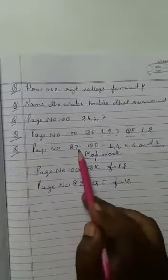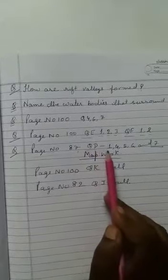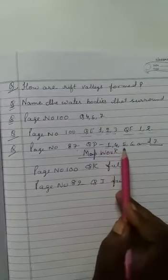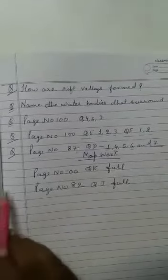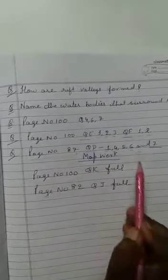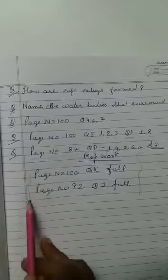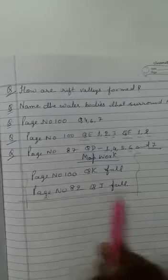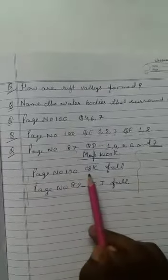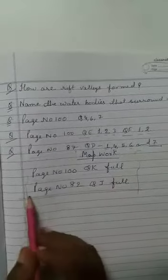Then page number 87, question number D: 1, 4, 5, 6, and 7. And for your map work, you have to do the revision of page number 100, question number K full, and page number 82, question number J full.